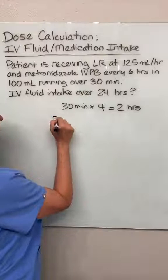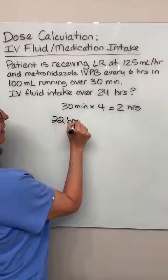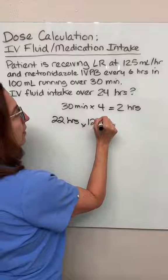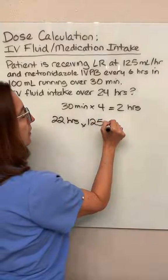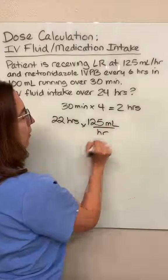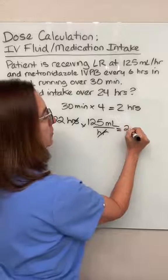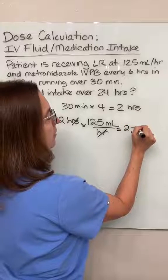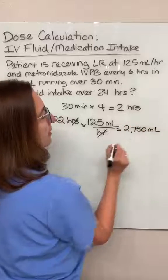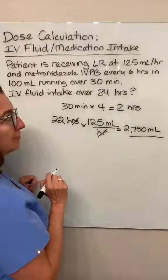For 22 hours a day, they are getting lactated ringers at a rate of 125 milliliters per hour. So if you multiply this out, you end up with 2750 mLs. That's the amount of fluid they're getting from their continuous infusion.